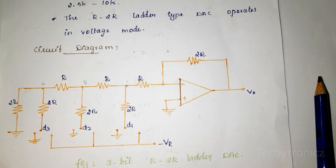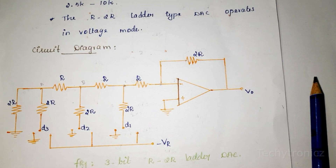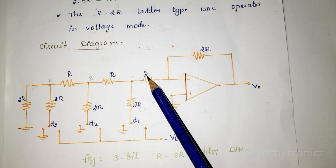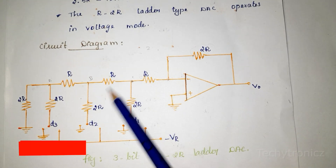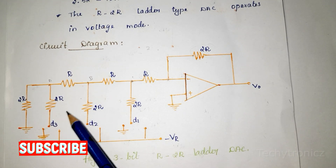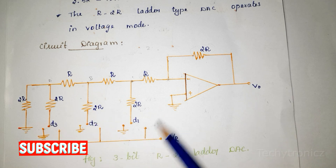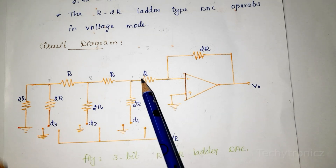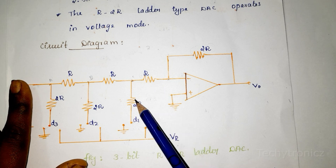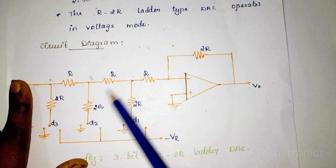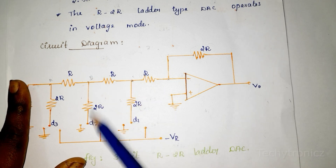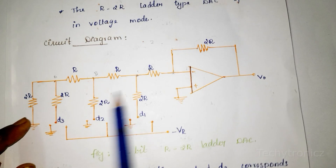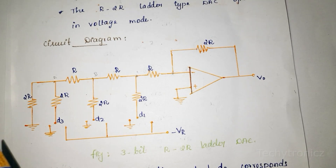Here this is the circuit diagram. We are using two values of resistor — R and 2R, arranged as R2R sections. If you are using a 3-bit R2R Ladder DAC, here we need to draw 3 R2R sections. Depending upon the number of bits, we can extend the R2R resistance sections accordingly.